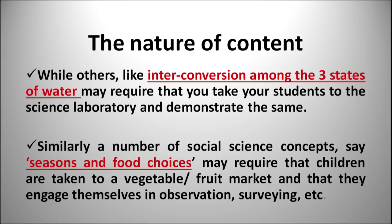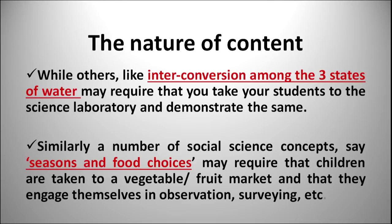But other topics, like understanding the three states of water, may require that you take your students to the science laboratory and demonstrate the same. Similarly, a number of social science concepts — for example, seasons and food choices — may require that children are taken to vegetable gardens or fruit markets where they can observe and survey how things work, making the concept more clear to them. So it all depends upon the nature of the content.